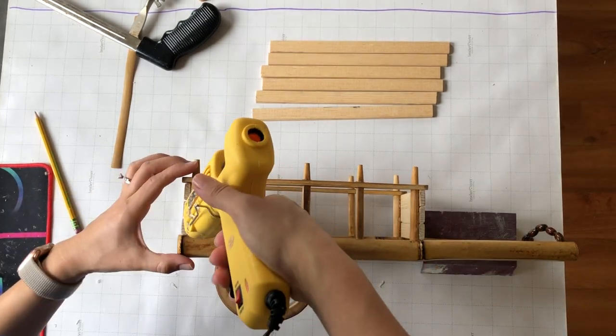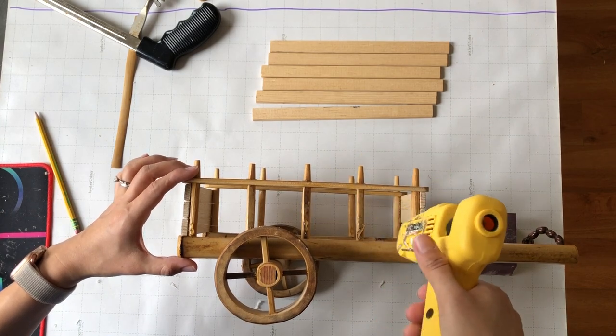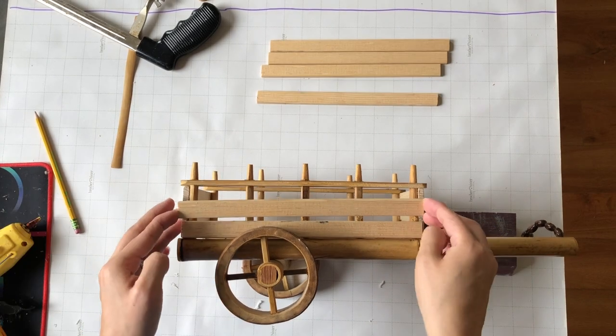Once I got the front and back, I'm going to start gluing the sides. And I'm basically going to do the exact same thing. Use hot glue and start gluing my sticks on the sides.